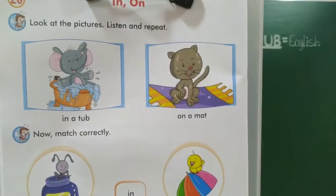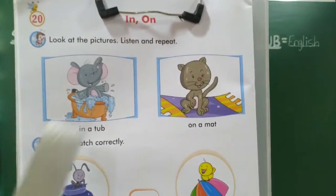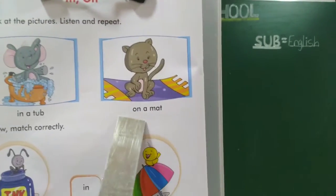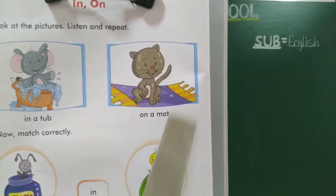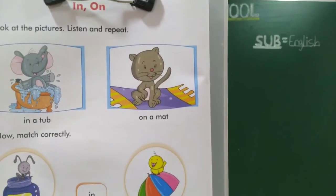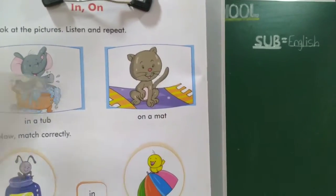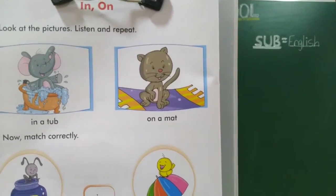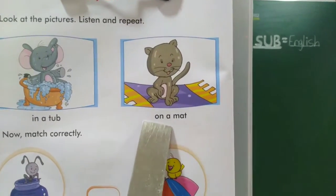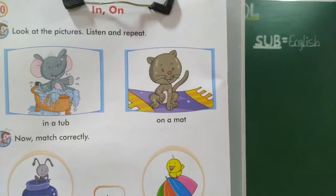In a tub. In manje kai? Vastu chaat madhe basla aahe. In a tub. On a mat. Ata aahe cat kaay aahe — mat chaat varti basla aahe na? Mat chaat varti basla aahe. On a mat. Mat chaat varti basla aahe.